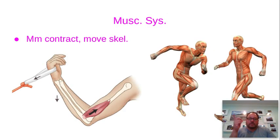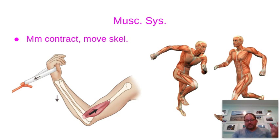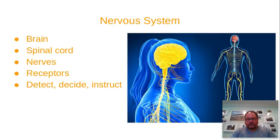Your muscular system is pretty straightforward — it has one job, and that's to contract. When we refer to the muscular system, we're talking about skeletal muscles that are attached to your bones. So when those muscles contract, they move the bones; when they move the bones, it moves you.